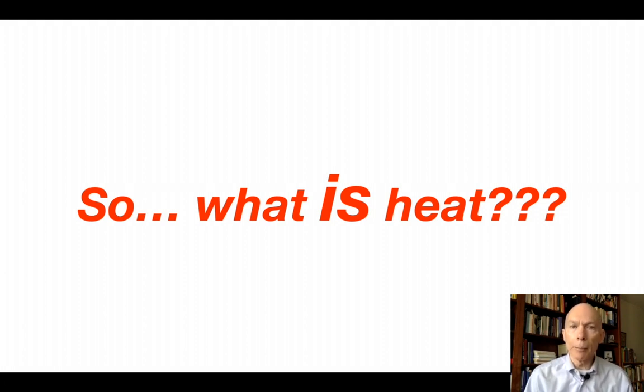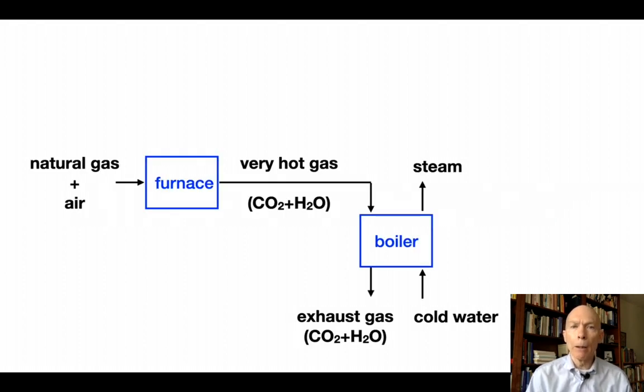First, let's get clear about the physics involved. Let's think about the previous discussion on the furnace and the boiler. What's happening there? Well, natural gas and air are combusted or burned in the furnace, and they generate a very hot gas of carbon dioxide and water. That gas goes into a boiler. Cold water also goes into the boiler. The hot gas heats up the cold water and generates steam from it.